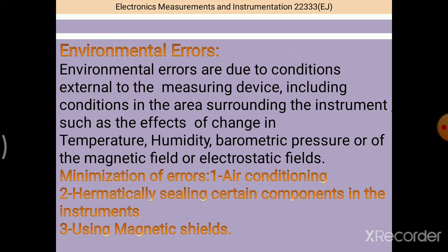Next errors: environmental errors. Environmental errors are due to conditions external to the measuring device, including conditions in the area surrounding the instrument, such as the effects of change in temperature, humidity, barometric pressure, or of the magnetic field or electrostatic fields. How to minimize these errors? By using air conditioning, hermetically sealing certain components in the instruments, and using magnetic shields or seals to protect against static and magnetic fields.